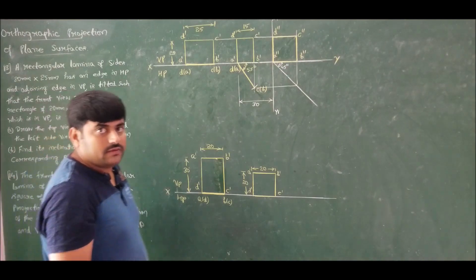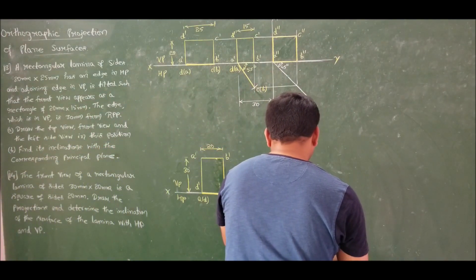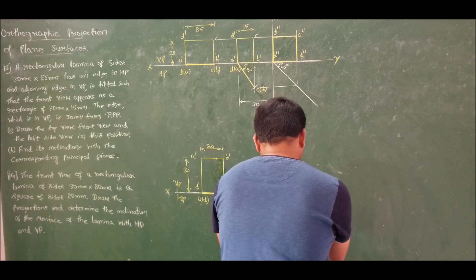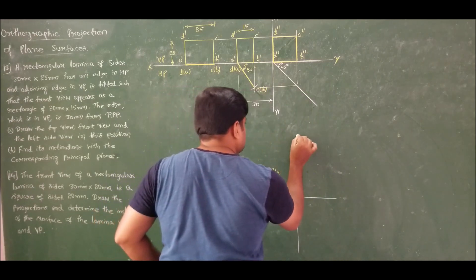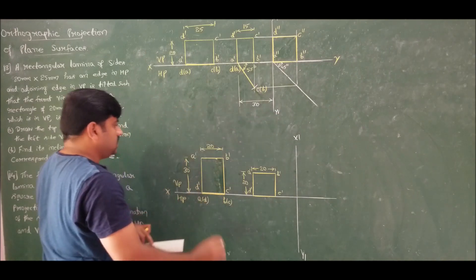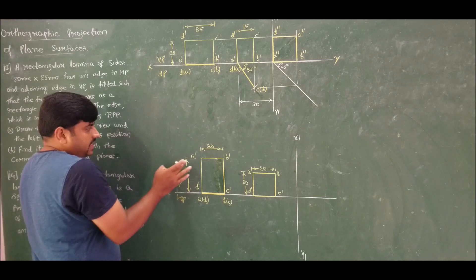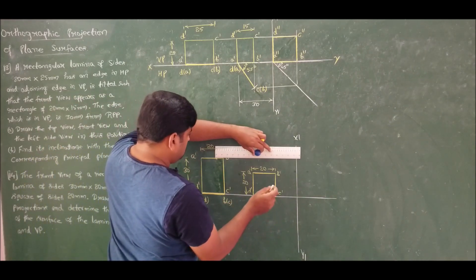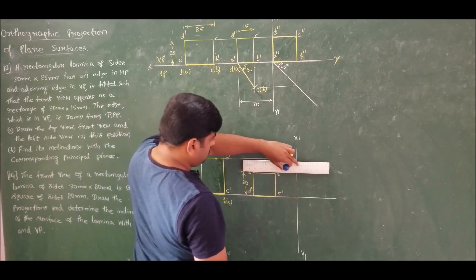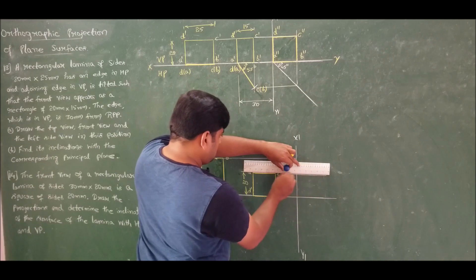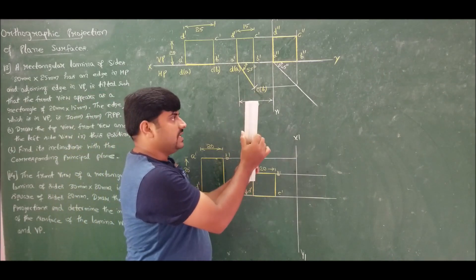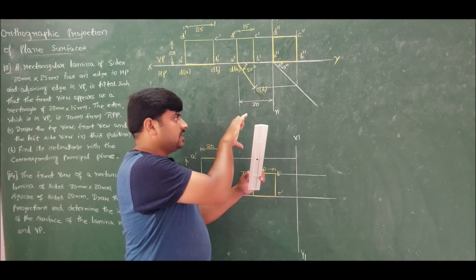He is asking for the inclination with HP and VP. So draw the side view from which we can extract the top view. This is X1Y1. Take the projection of this — if I look from here, I will get a straight line of a'd'. Take the projection from here also. It is like a mirror which is inclined — I incline the mirror and take the projection, so it looks like a square.